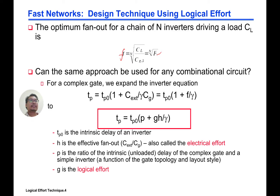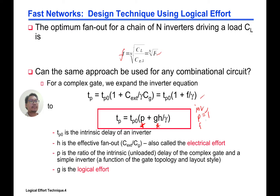Can the same approach be used for any combinational circuit? For a complex gate, we can expand the inverter equation to: TP equals TP0 times (P plus GH over gamma). The difference from the inverter equation is we now have the term P and the term GH. For an inverter, P equals 1 and F equals GH. When we extend to logic gates, P, G, and H can all be different.